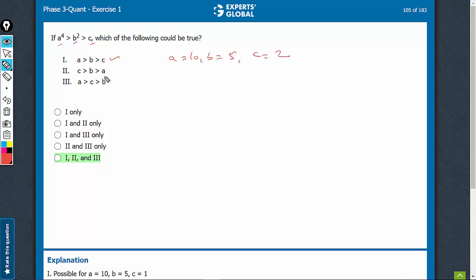Look at the next one. This is also possible for negative values, for example. Let's say a = -3, b = -2, c = -1.